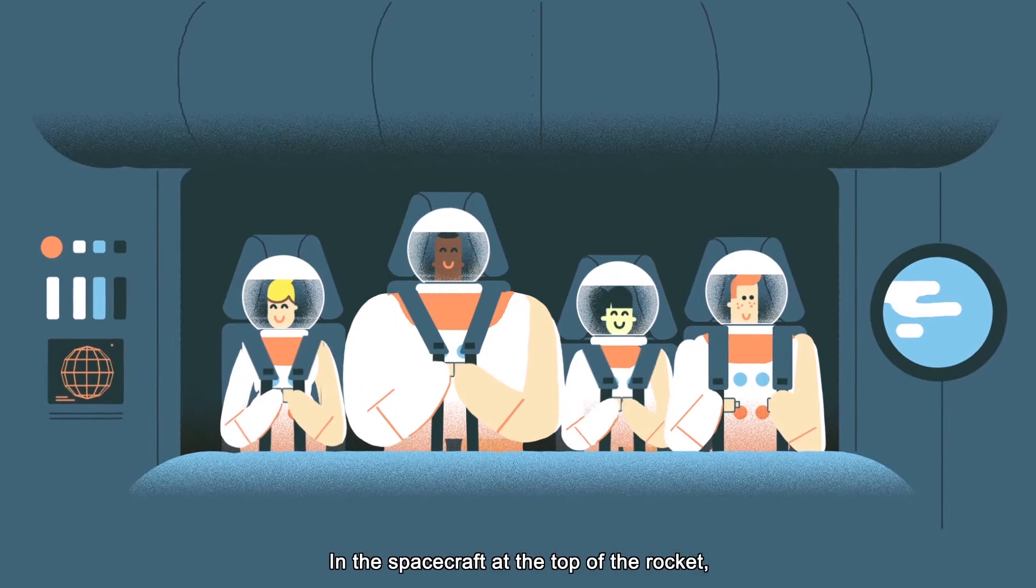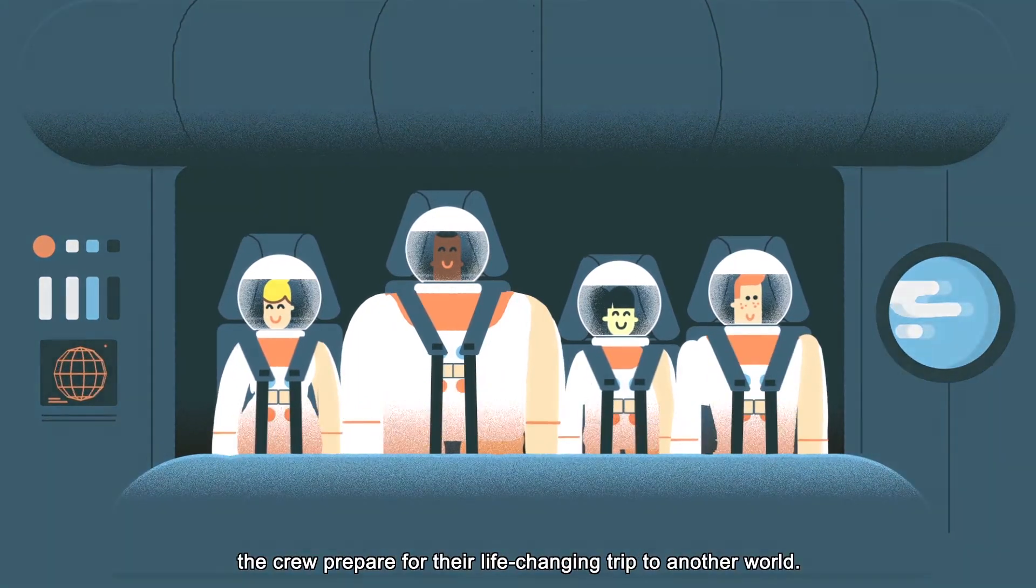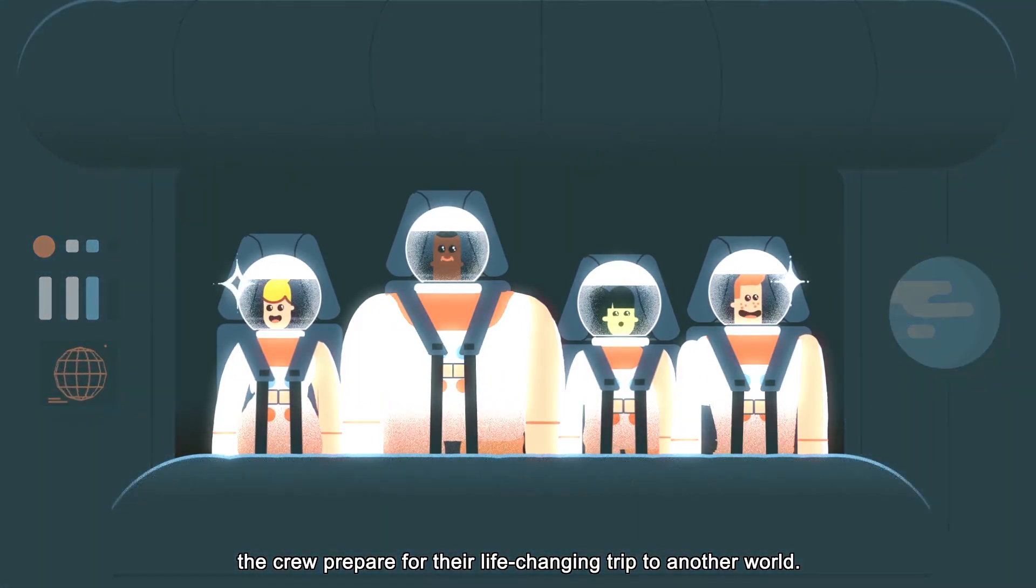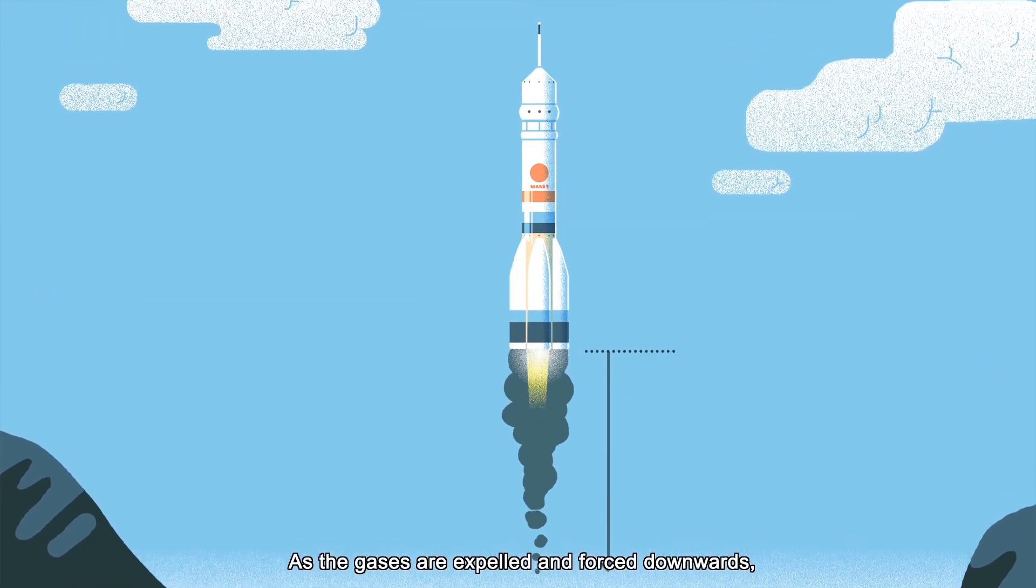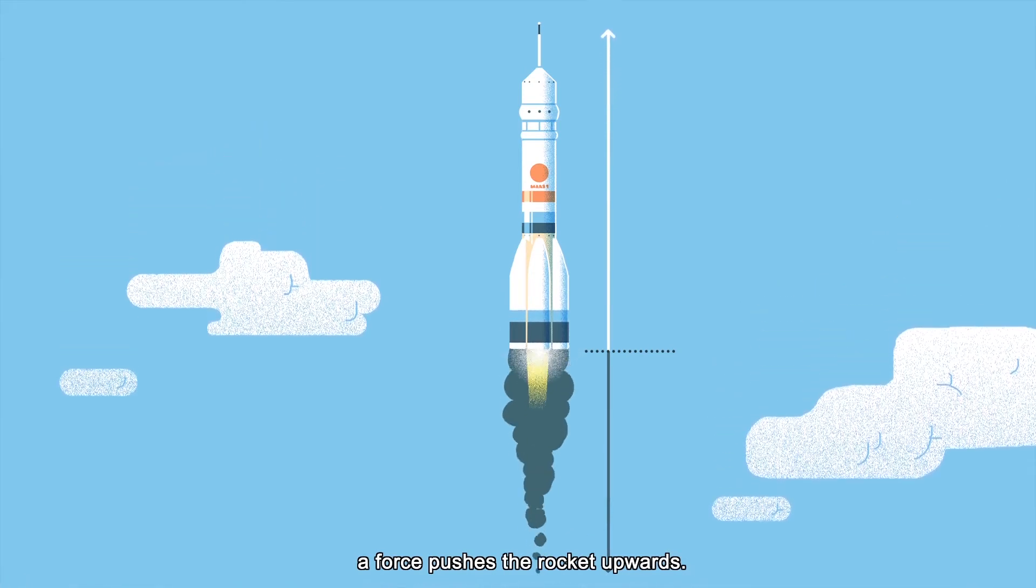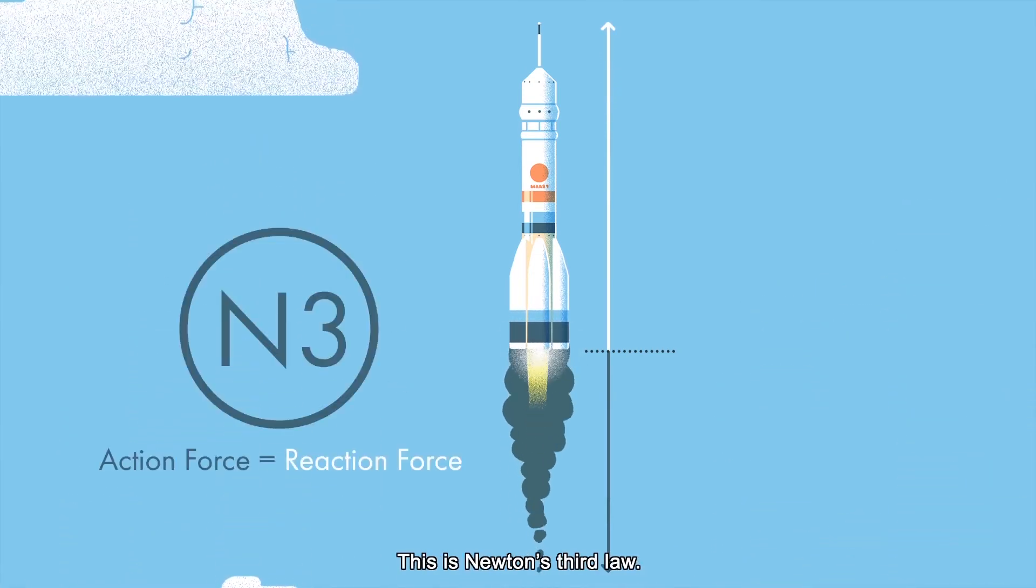In the spacecraft, at the top of the rocket, the crew prepare for their life-changing trip to another world. The fuel is ignited. As the gases are expelled and forced downwards, a force pushes the rocket upwards. This is Newton's third law.